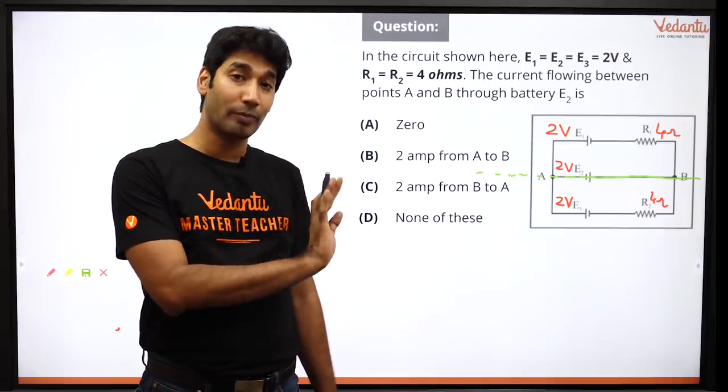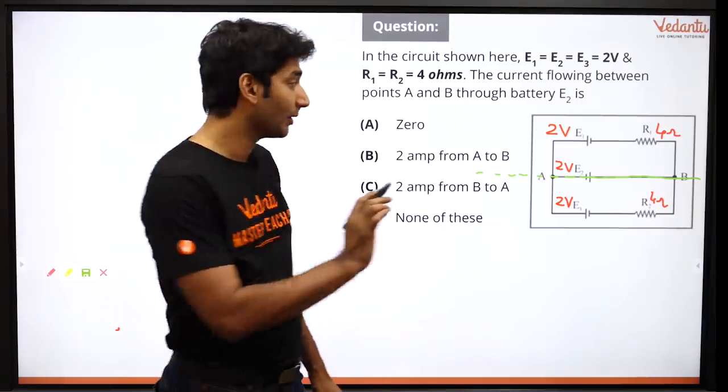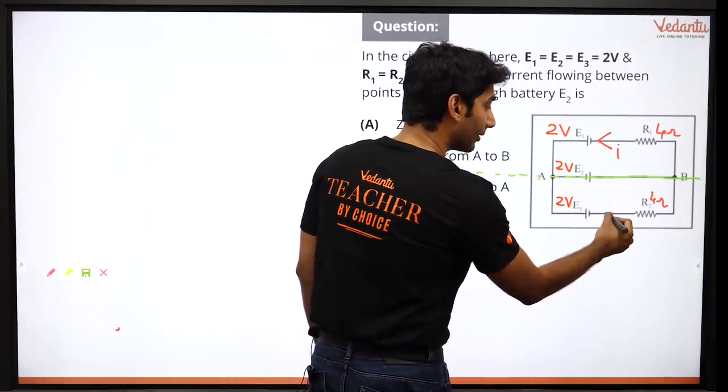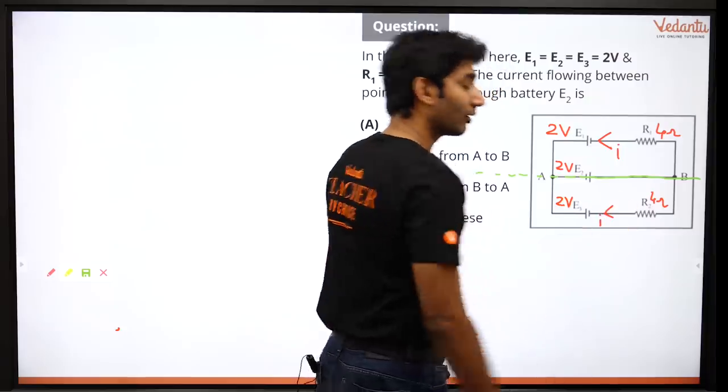When I see that two branches are symmetrical, it means that the current going through both of them will also be symmetrical.